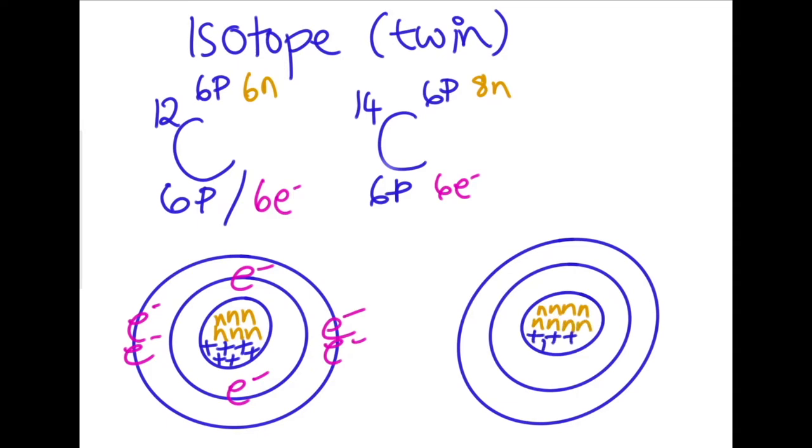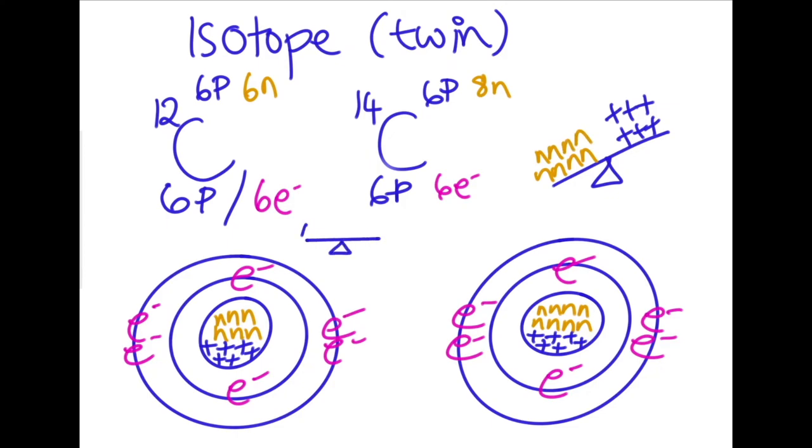One, two, three, four, five, six, seven, eight, six protons, and therefore our six electrons. So let's just make sure you can see what's going on in the middle of our carbon 12 and our carbon 14. Okay, so carbon 14 has one, two, three, four, five, six protons; one, two, three, four, five, six, seven, eight neutrons. Carbon 12: one, two, three, four, five, six protons; one, two, three, four, five, six neutrons.